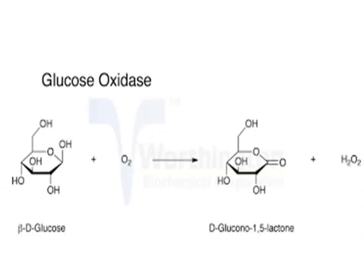Even greater specificity is shown by the fungal enzyme glucose oxidase, which catalyzes the reaction: beta-D-glucose plus O2 gives D-glucono-1,5-lactone plus H2O2. No other naturally occurring sugar, including alpha-D-glucose and beta-D-galactose, can be acted upon to any appreciable extent.